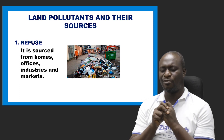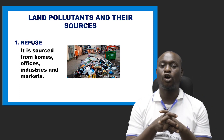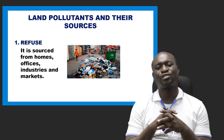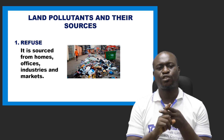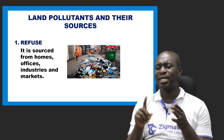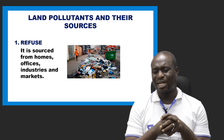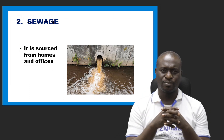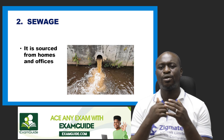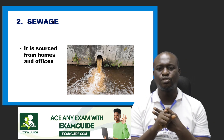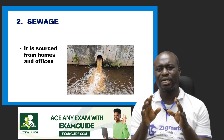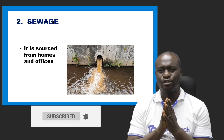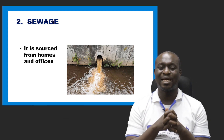Now let's look at some land pollutants and their sources. Number one is refuse, which can simply be called solid waste. Solid waste can be sourced from homes, offices, industries, and marketplaces. The next one is sewage, which is liquid waste. Liquid waste can be sourced from homes, offices, and industries.